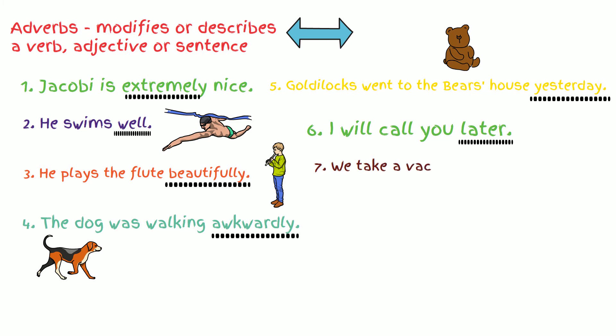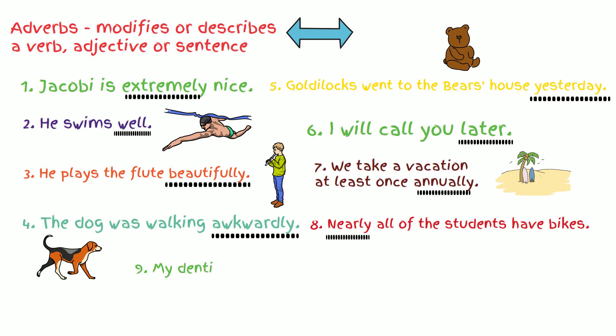Number seven. We take a vacation at least once annually. Again, this is time or frequency. How often do they take a vacation? Annually is the adverb. Number eight. Nearly all of the students have bikes. Nearly tells how many. And it also has L-Y. So it is an adverb.